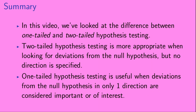In summary, two-tailed hypothesis testing is more appropriate when looking for deviations from the null hypothesis but no direction is specified. One-tailed hypothesis testing is useful when deviations from the null hypothesis in only one direction are considered important or of interest.